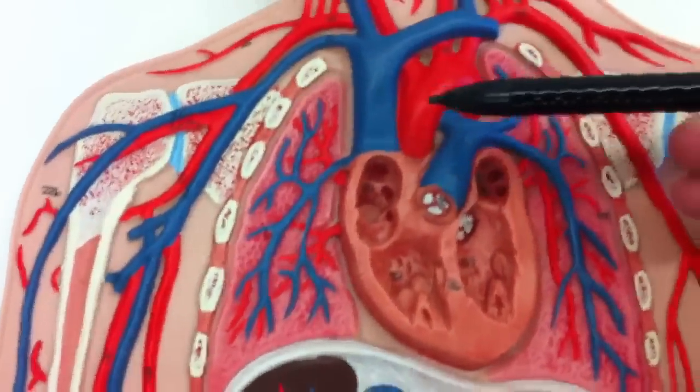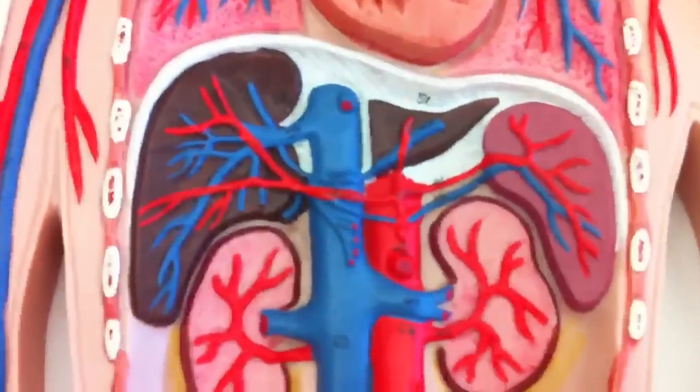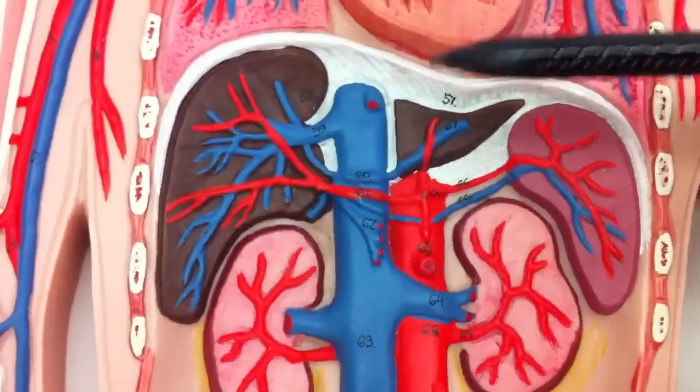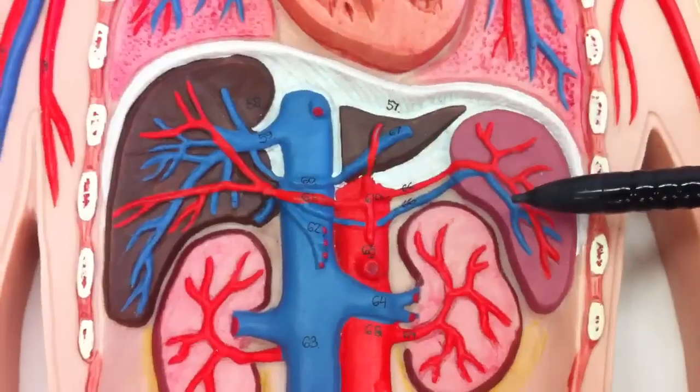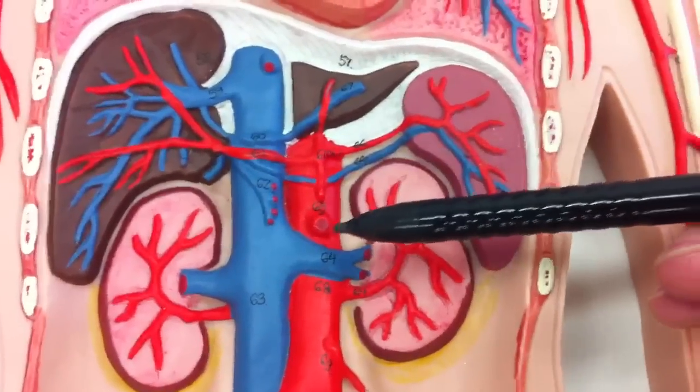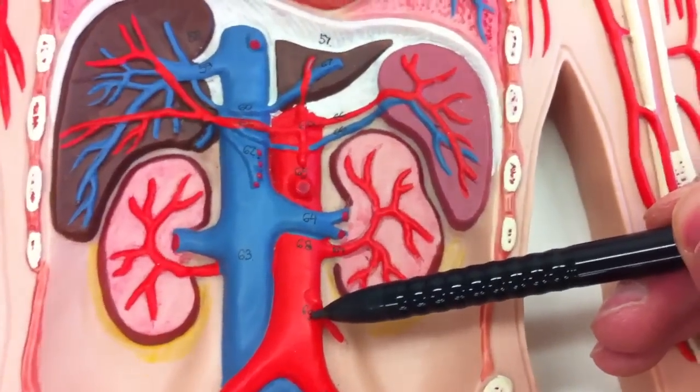Coming back down to the inferior or descending aorta, we have the celiac trunk, which will have connections to the hepatic artery and then the splenic artery. Right below that we have the superior mesenteric artery and the inferior mesenteric artery.